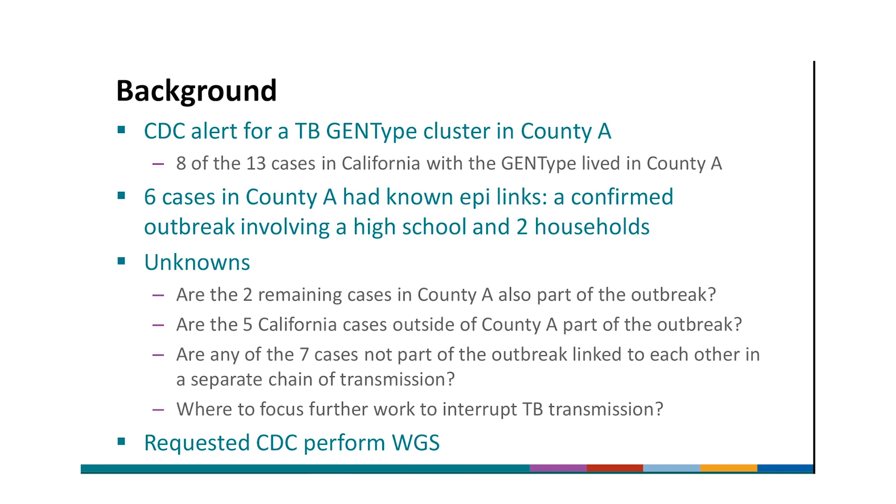But we in County A were left with some unknowns. Are the two remaining cases in County A also part of the outbreak? Are the five California cases outside of County A part of the outbreak? Are any of the seven cases not part of the outbreak linked to each other in a separate chain of transmission? Where should we focus further work to interrupt TB transmission in this outbreak? To help answer these questions, we asked CDC to perform WGS on all 13 California isolates in the genotype cluster.